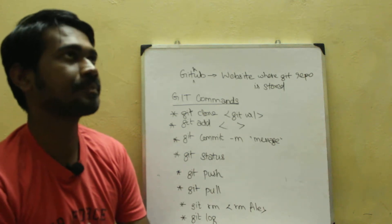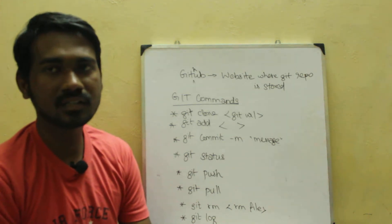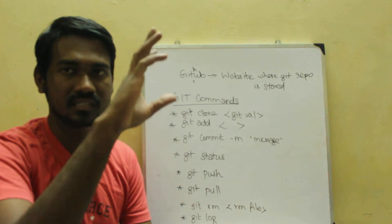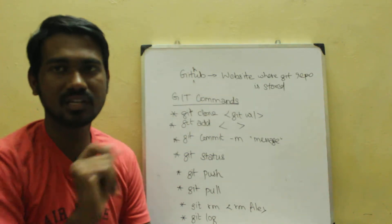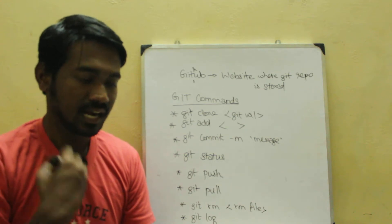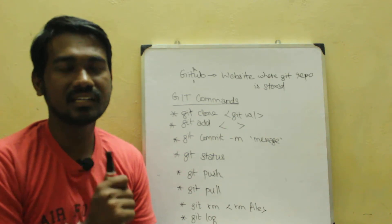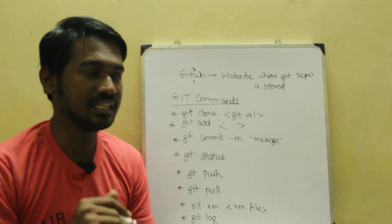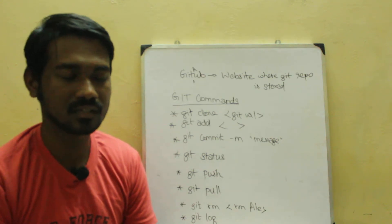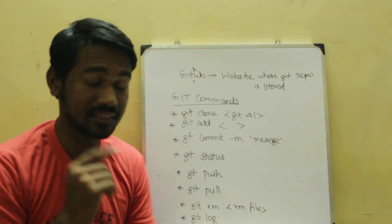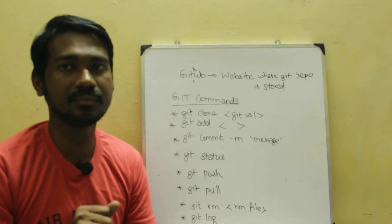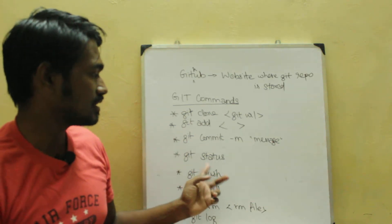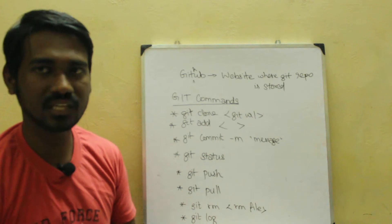Git status takes a snapshot and is useful for comparing files. There is a central repository, and we have a local copy. Git status lets you compare a file against the central repository using snapshots.